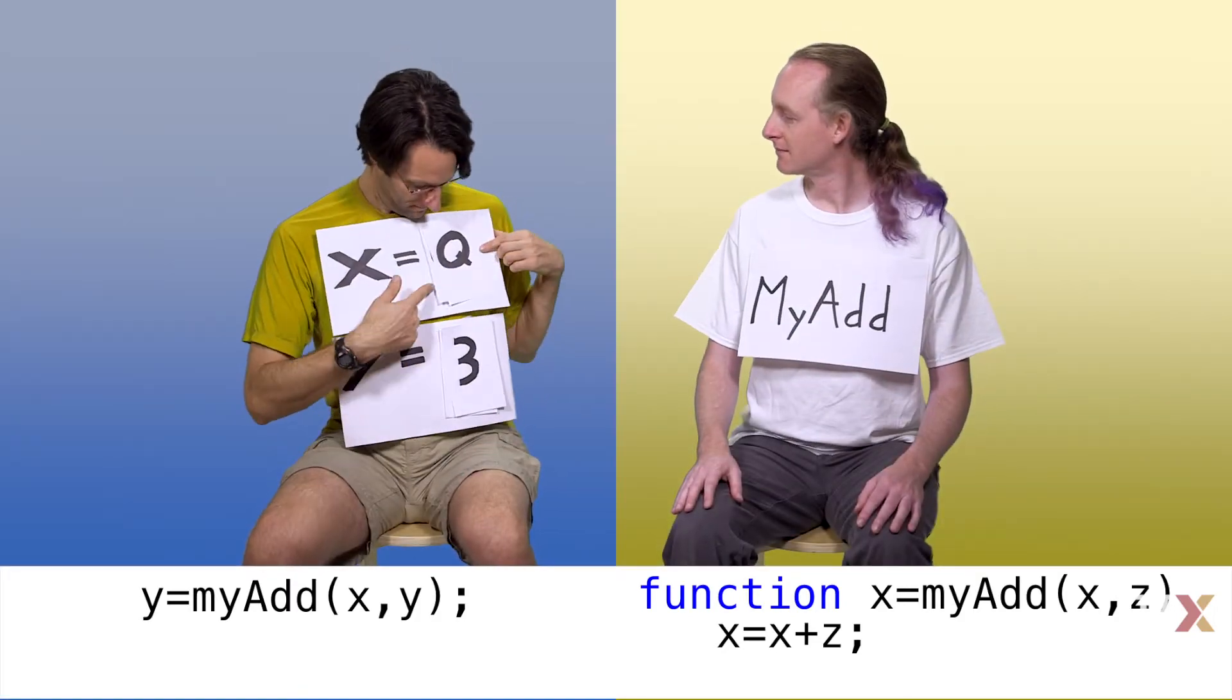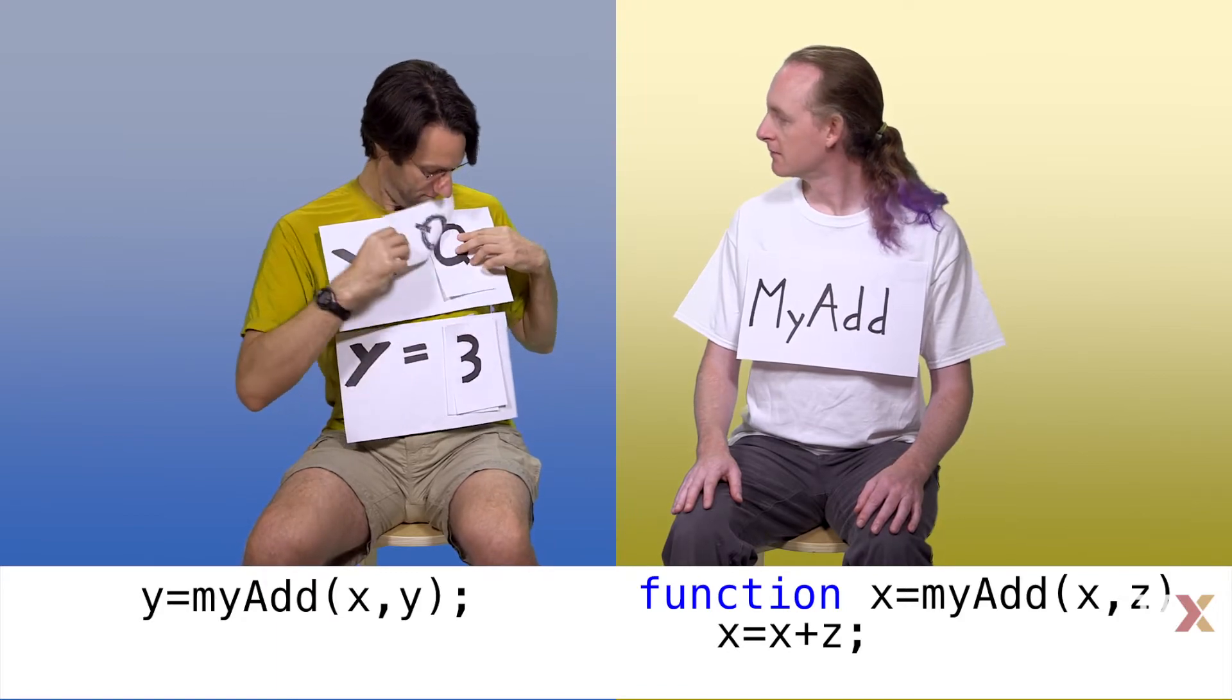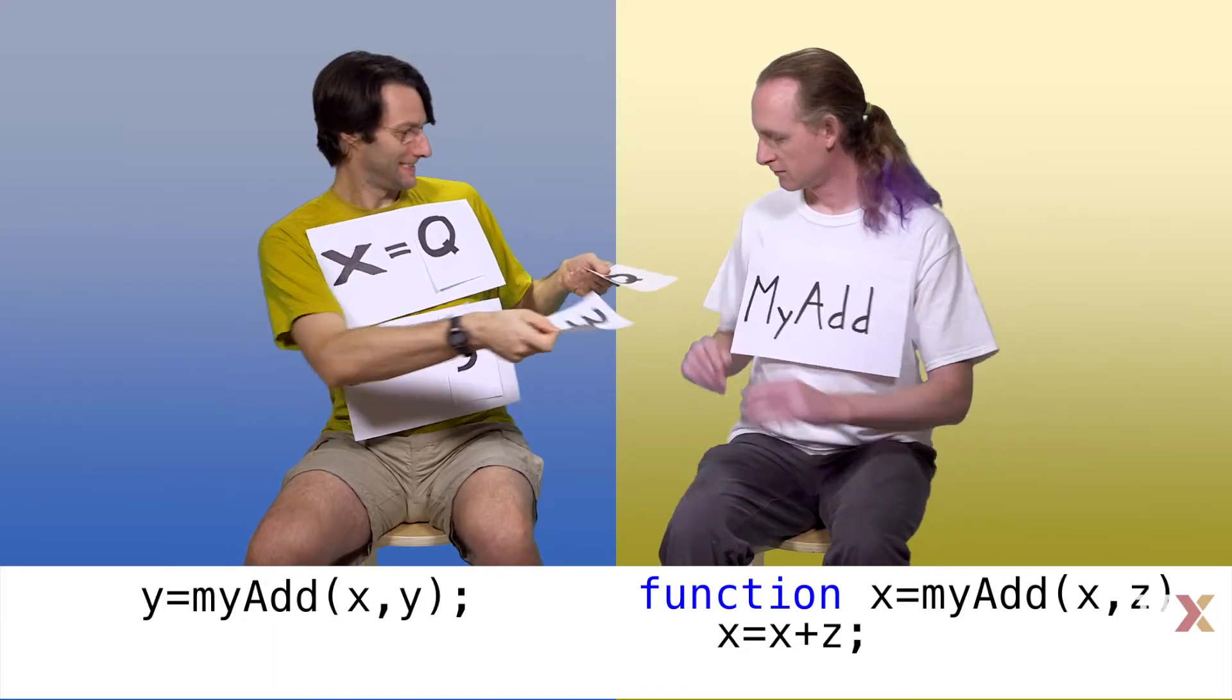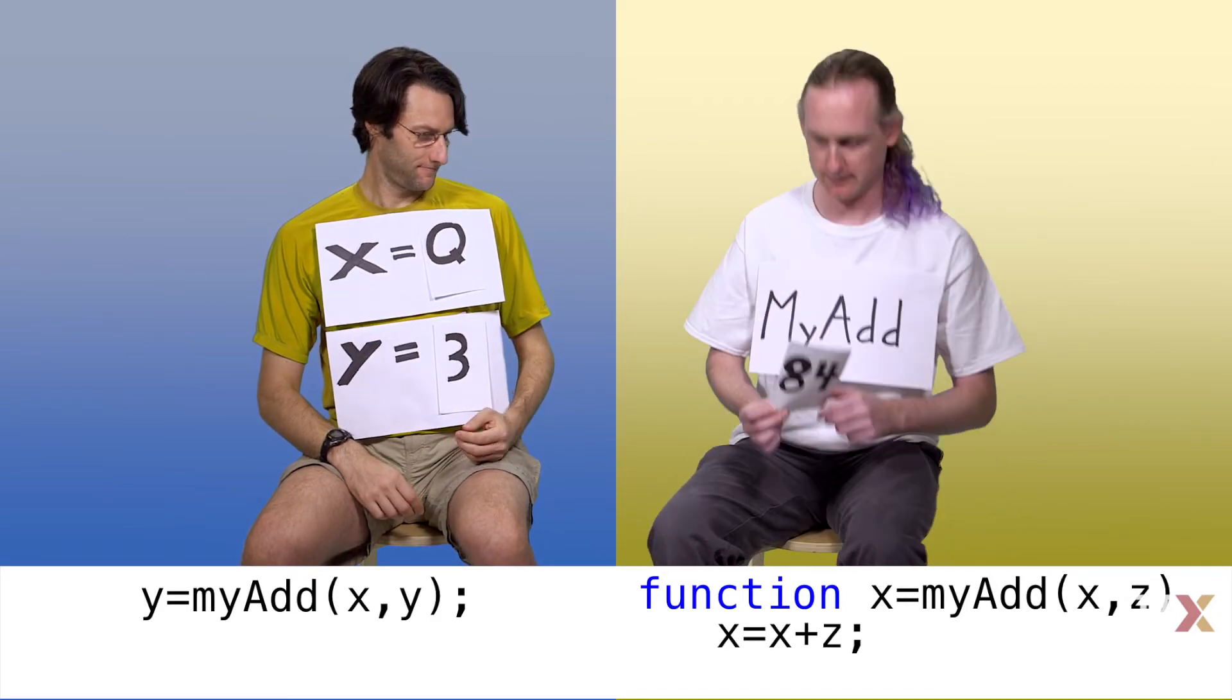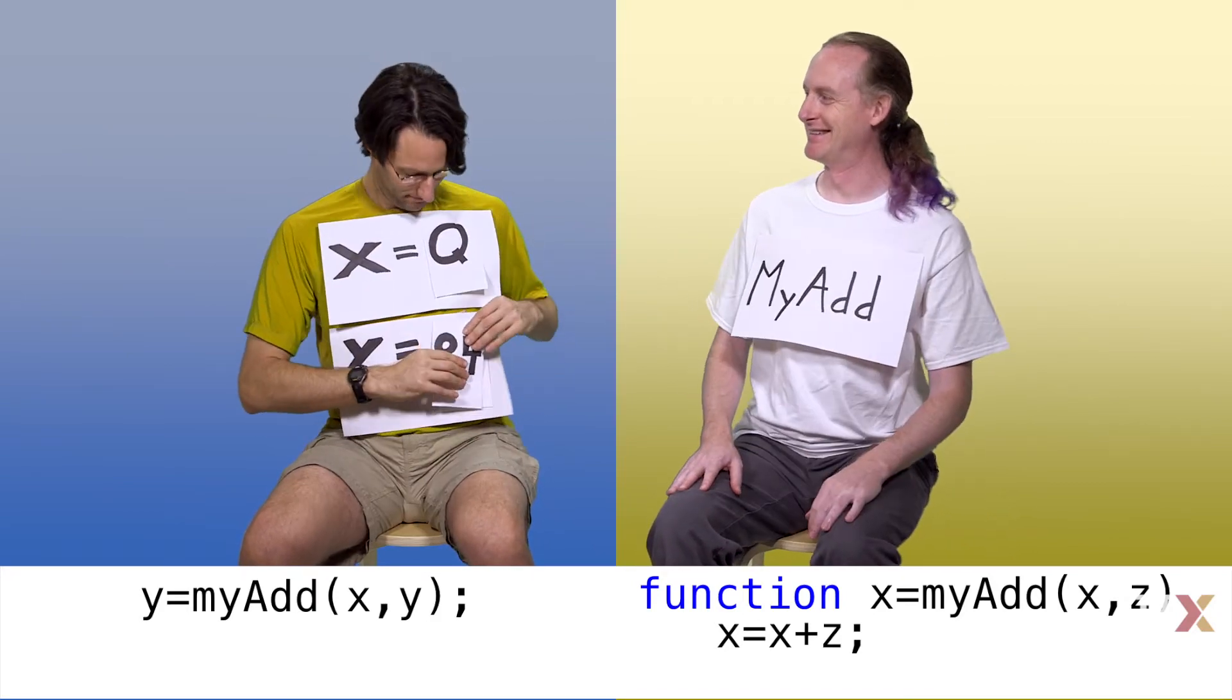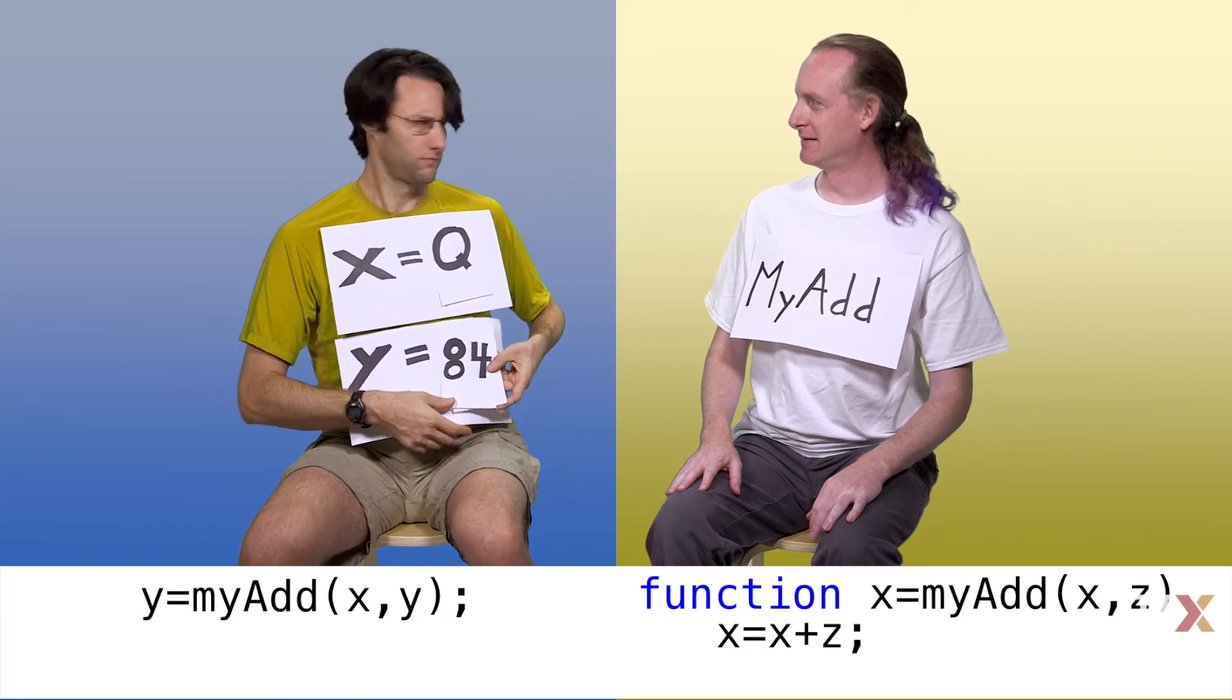In theory, the myAdd function can take any two inputs. In this case, the script is passing the letter q and the number 3. When the function tries to add the values together, it will return a number, but it doesn't necessarily make sense.